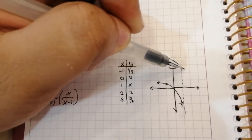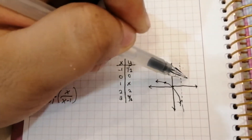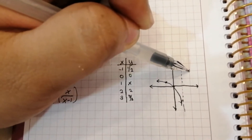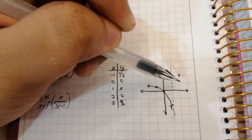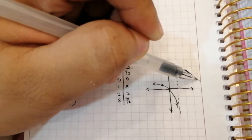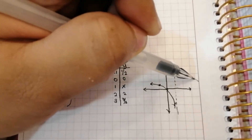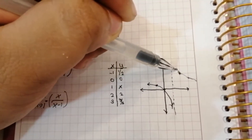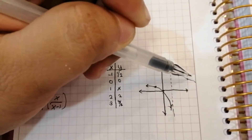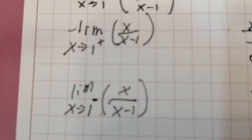Then on the other side, we have 2 and 2, then 3 and 3 halves. So the line goes on this part of the graph. As you can see, we will be looking at the behavior near the asymptote.